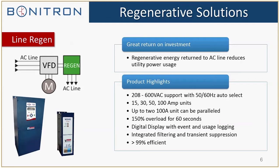Moving on to our line regeneration models. We have two separate part numbers. Our smaller units are the M3545 units, which are 15 amp, 14 horsepower units. All Bonitron regen modules are rated at 100 percent duty cycle, meaning the capabilities listed — whether 15 amps, 30 amps, 50 amps, or 100 amps — it can do that all day long, 100 percent of the time.